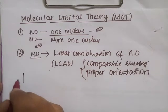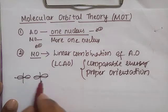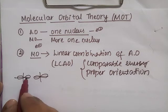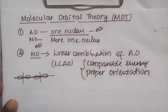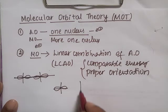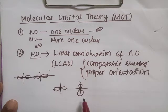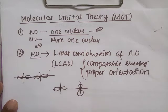For example, if two atomic orbitals possess similar energies and are approaching one another along the axis, they will combine. However, if the orientation is opposite or incorrect, even with similar energies, those two atomic orbitals will not combine.